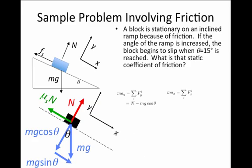We can write these out. In the y direction, there are two forces, the normal force in the positive y direction and mg cosine theta in the negative y direction. Since the object doesn't leave the inclined plane, the acceleration in the y direction is 0 and the sum of these two terms is 0, and therefore the normal force has to equal mg cosine theta. We're going to use that in just a moment.